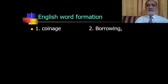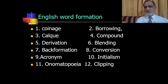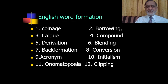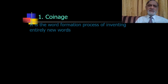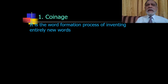In English, word formation is done in several manners — about twelve types. The first is coinage: it is the word formation process of inventing entirely new words. We coin new words. Examples include the word 'robotics' invented in 1941, 'genocide' in 1943, 'black hole' in 1968, and then more recently 'blog', 'internet', 'Google', and 'touchscreen'.